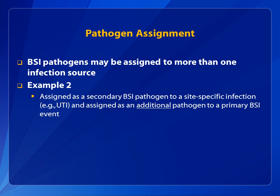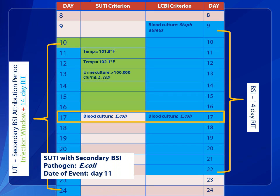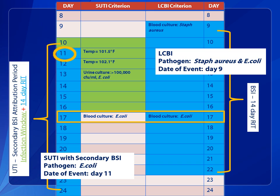Similarly, a secondary BSI pathogen may be assigned to a site-specific infection — for example, a UTI — and also as an additional primary BSI pathogen. In this scenario, a pathogen from a blood culture collected on hospital day 17 matches the SUTI pathogen. In accordance with the secondary BSI guide, Appendix 1, the BSI is determined to be secondary to the SUTI, pathogen E. coli, and date of event hospital day 11. Note the blood culture collection on hospital day 17 also occurred within the RIT of a primary BSI. In keeping with RIT guidance, the E. coli pathogen is assigned to the LCBI as well. This results in identification of an LCBI with pathogens Staph aureus and E. coli, and a date of event on hospital day 9.